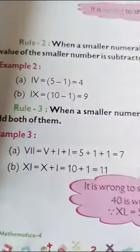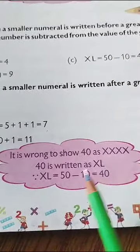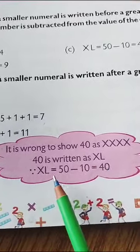Now see, it is written. It is wrong to show 40 as XXXX. 40 is written as XL. XL is equal to 50 minus 10 is equal to 40. Okay?